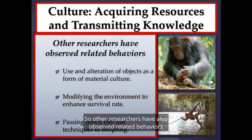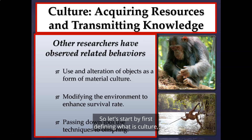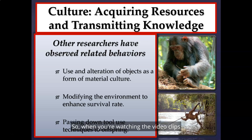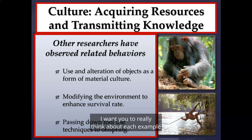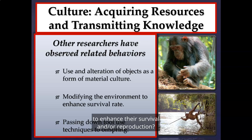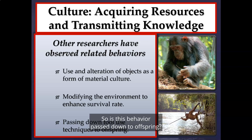Other researchers have also observed related behaviors in both captive and natural settings. When defining what qualifies as culture, some definitions use the use and alteration of objects as a form of material culture — altering objects found in the natural habitat such as twigs, rocks, and leaves. Key questions include: are they modifying the environment to enhance survival or reproduction, and is this a learned behavior passed down to offspring rather than something they are born knowing?